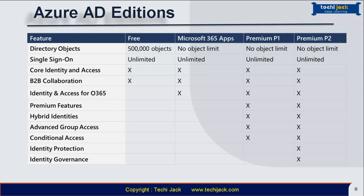The Azure Active Directory Premium P1 plan, in addition to the free features, lets hybrid users access both on-premises and cloud resources. It also supports advanced administration such as dynamic groups, self-service group management, Microsoft Identity Manager, and cloud writeback capabilities, which allow self-service password reset for on-premises users. The Premium P2 plan, in addition to free and P1 features, also offers Azure AD Identity Protection for risk-based conditional access, and Privileged Identity Management to help discover, restrict, and monitor administrators and their access to resources, providing just-in-time access when needed.